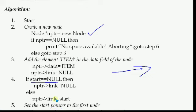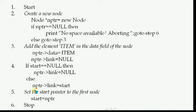If start is not null — else — meaning there are already existing nodes, then we write: nptr->link = start. This means: store start (the address of the current first node) into the link part of the new node, linking the new node to the previous first node.